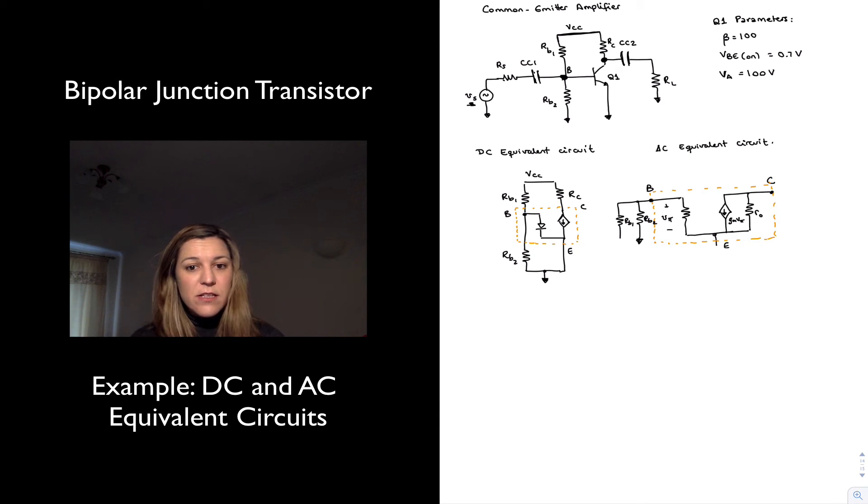VCC is a DC voltage source, and so in my AC equivalent circuit, I will short across my voltage source, which means it will be just RB1 connected directly to ground, as short to ground. The capacitors CC1 and CC2, because I'm in the mid-band region, I'm going to assume that they are short circuits. That's the way I'm going to deal with the coupling capacitors in my AC equivalent.